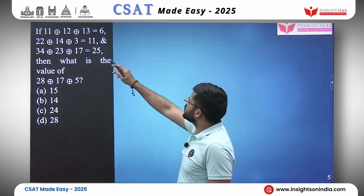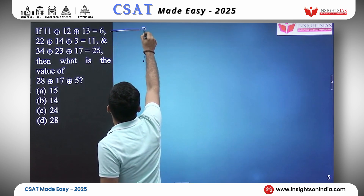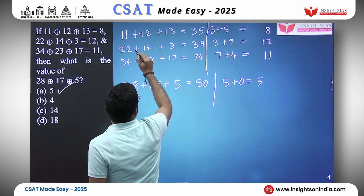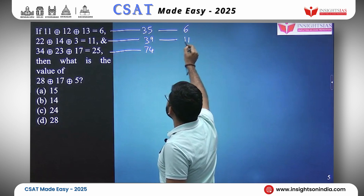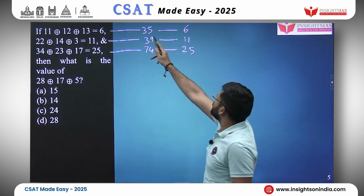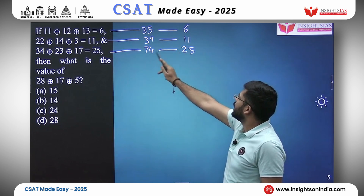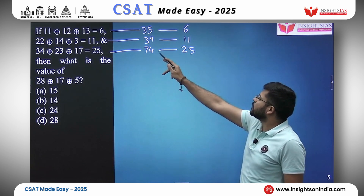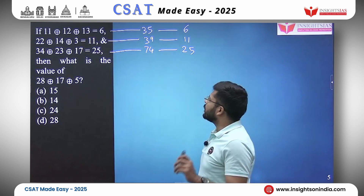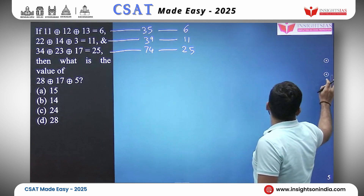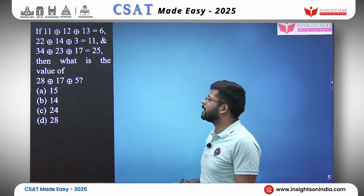Let us try some operations. 11 plus 12 plus 13 is 35, the second gives 39, and the third gives 74 — but we want 6, 11, and 25. Trying sum of digits: 3 plus 5 is 8 or 3 into 5 is 15 — no. 3 plus 9 is 12, 3 into 9 is 27; 7 plus 4 is 11, 7 into 4 is 28 — none of these are working out.